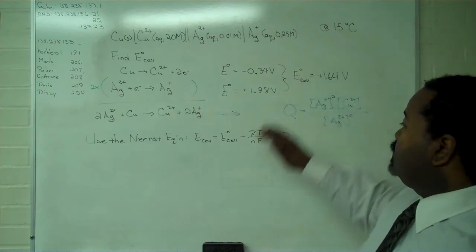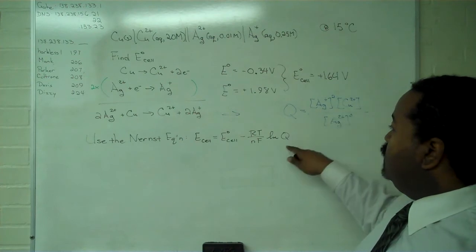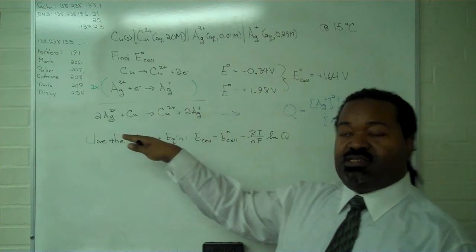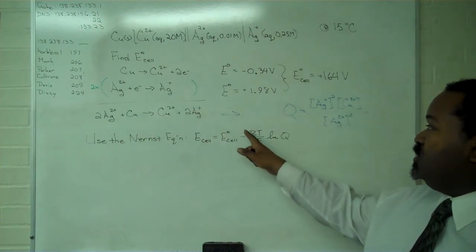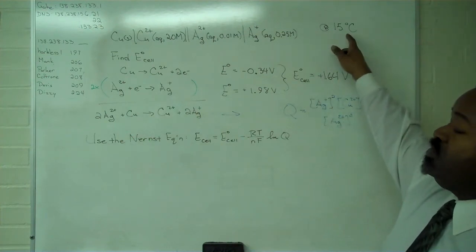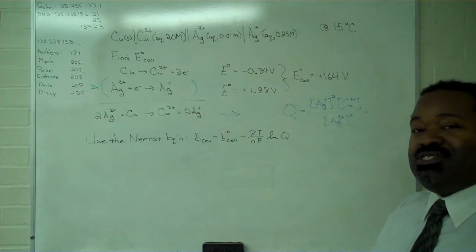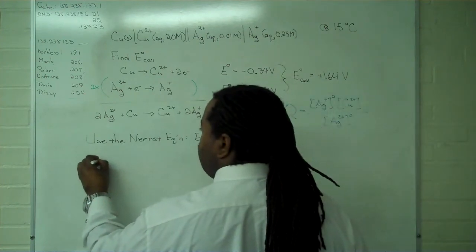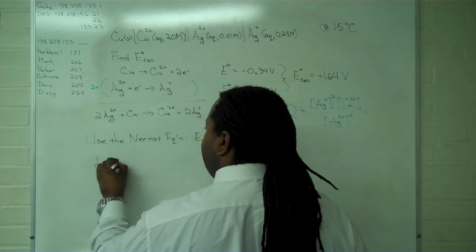So we have E-cell standard, we have Q. We know the number of electrons used because of this recombination step. Faraday's constant, gas constant, and we just need to convert this temperature of 15 degrees Celsius into degrees Kelvin.